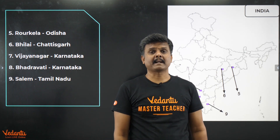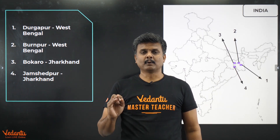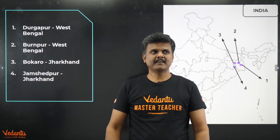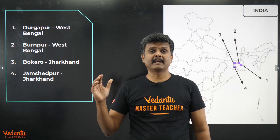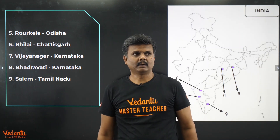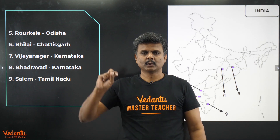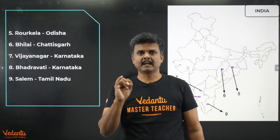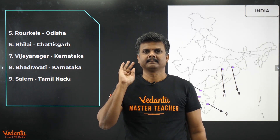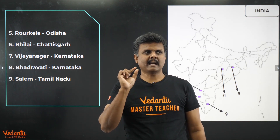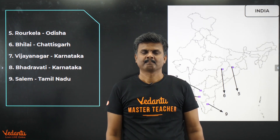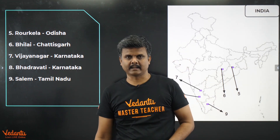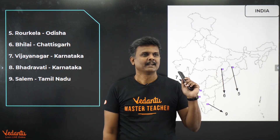To recap all nine steel plants: two in West Bengal — Durgapur and Burnpur; two in Jharkhand — Bokaro and Jamshedpur; two in Karnataka — Vijayanagar and Bhadravati; and the remaining three: Salem in Tamil Nadu, Bhilai in Chhattisgarh, and Rourkela in Odisha. The authority maintaining these is called SAIL — Steel Authority of India. Remember Bhilai and Rourkela especially.